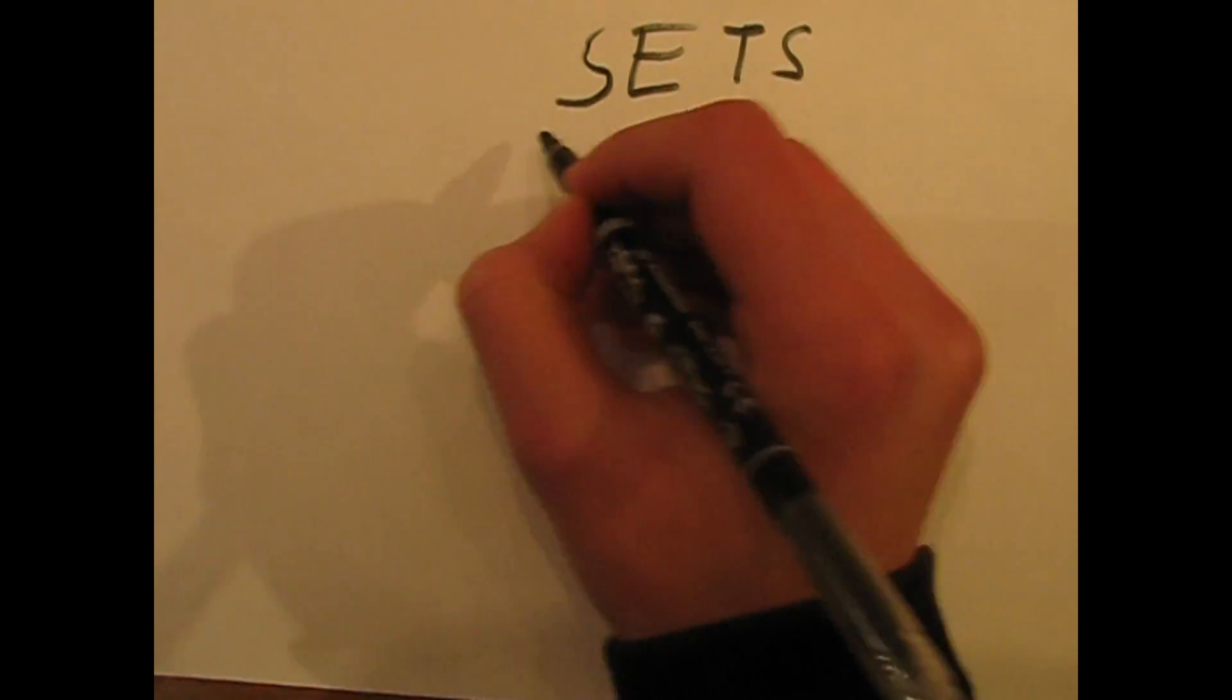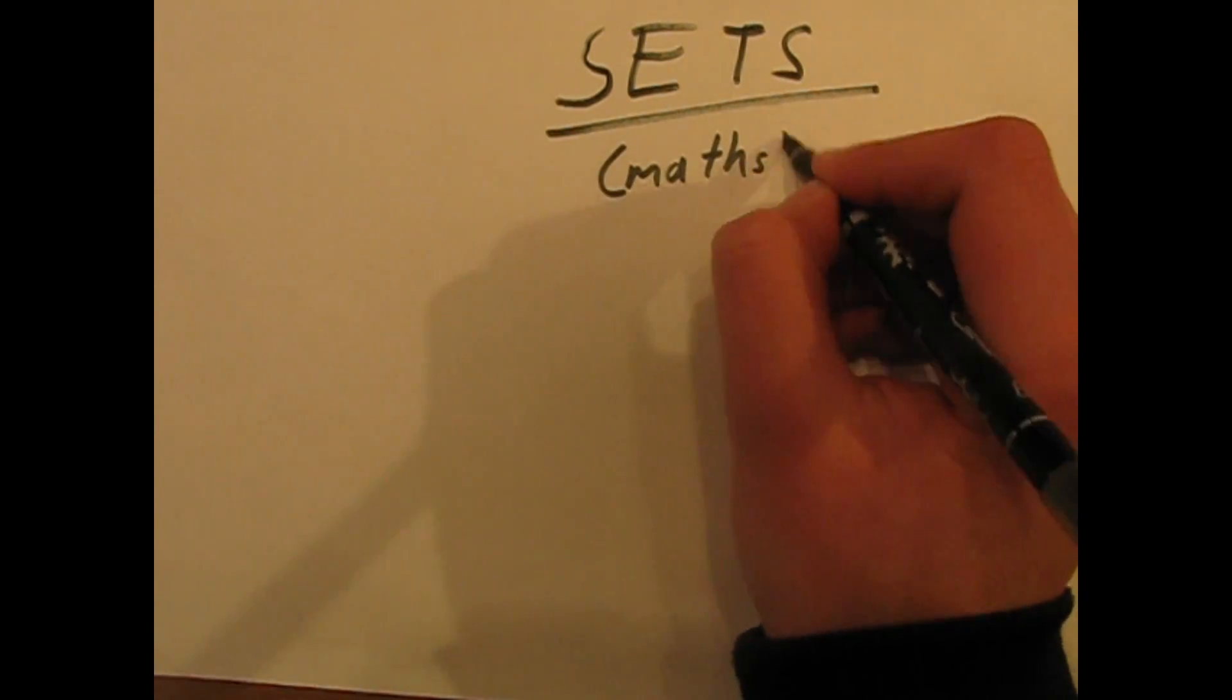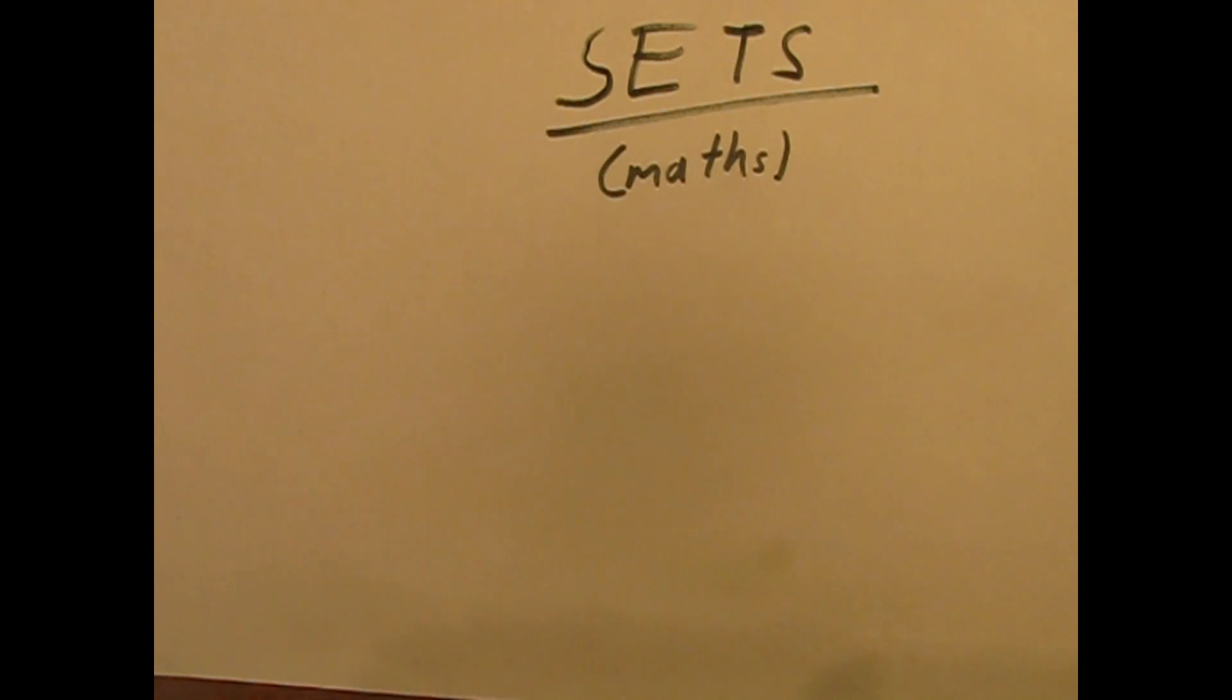Today we're talking about sets in mathematics. In mathematics, a set is a collection of well-defined and distinct objects of our perception and thought, considered as an object in its own right.